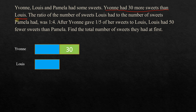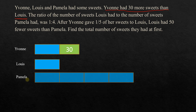There is another comparison here. The ratio of the number of sweets Louis had to the number of sweets Pamela had was 1 to 4. So if Louis had one unit, Pamela would have four units. After Yvonne gave one-fifth of her sweets to Louis — this is what Yvonne is giving to Louis.